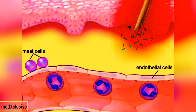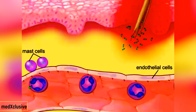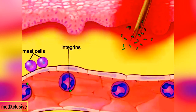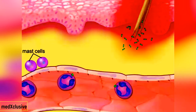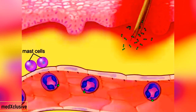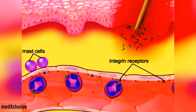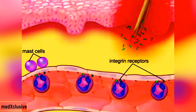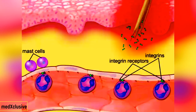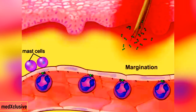As the neutrophils roll along the endothelium, they encounter chemicals that activate integrins, which are adhesion receptors on their surfaces. These integrins then tightly attach to adhesion receptor molecules on the endothelial cells, causing the neutrophils to stick to the endothelium and stop rolling. This accumulation of neutrophils along the walls of the capillary is referred to as margination.